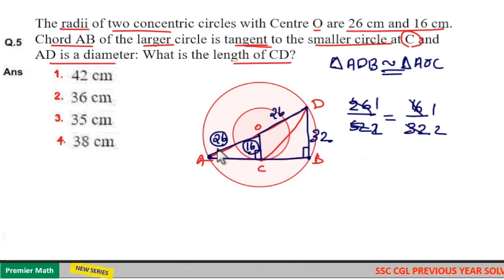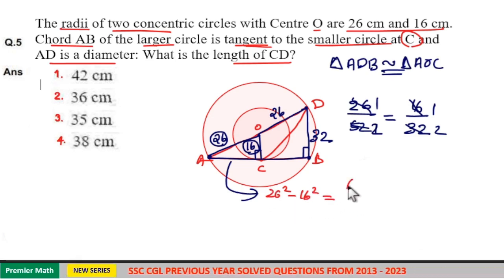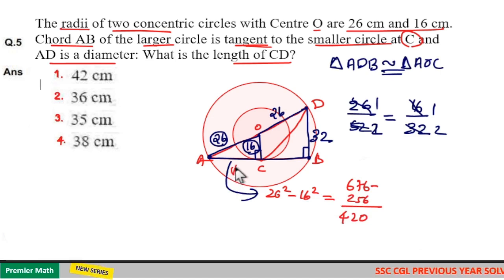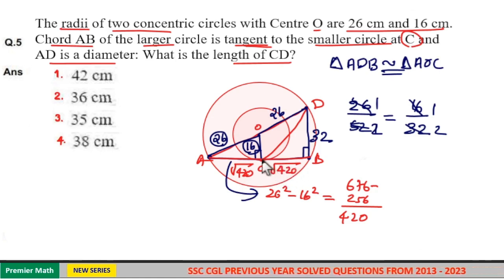And here, this is 26 and this is 16. Which means, this side is equal to root of 26 square minus 16 square. Which is equal to 676 minus 16 square is 256, which is 420. So this side is equal to root 420. Same way, this side is also root 420. AC is equal to CB.